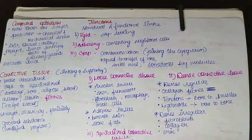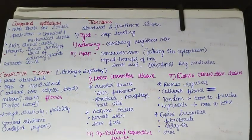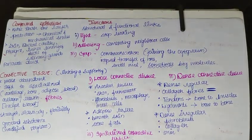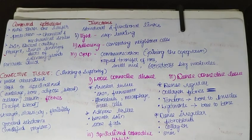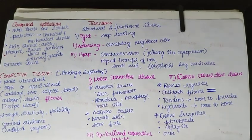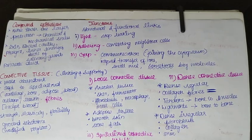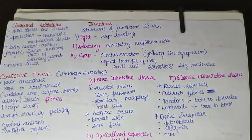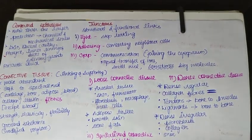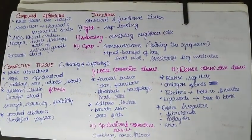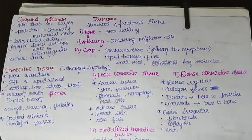Happy day everyone. In the last video we discussed about the types of tissues and we further discussed about the epithelial tissue, its types, the simple tissue and its types, and also the two specialized types which are ciliated and glandular epithelium. Now we will be continuing from the compound epithelium.